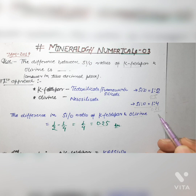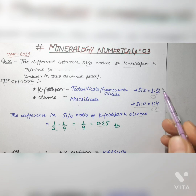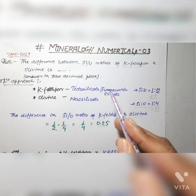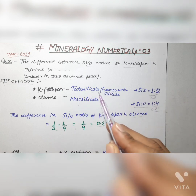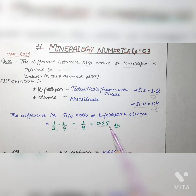In order to calculate the difference in Si:O ratio of Kefelspar and olivine, you have to subtract 1/2 from 1/4 — that is the Si:O ratio of tectosilicate minus the Si:O ratio of neosilicate — and that equals 1/4, or 0.25. This is your answer in the case where you do not know the chemical composition of Kefelspar and olivine.